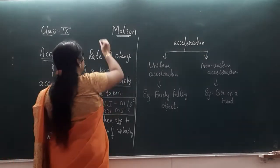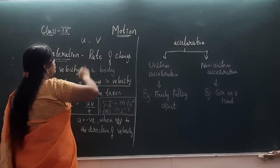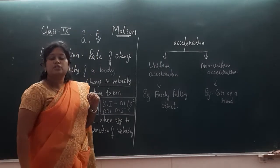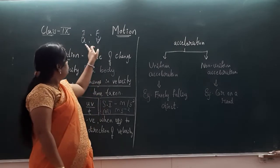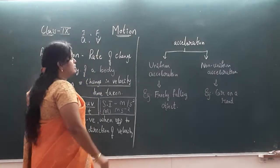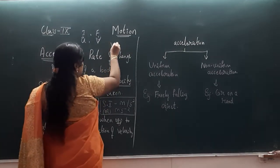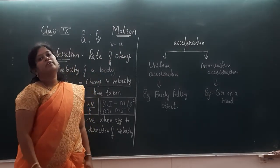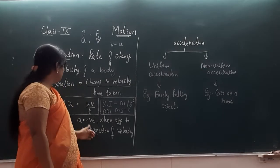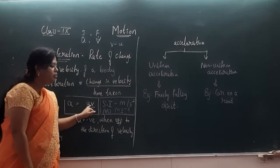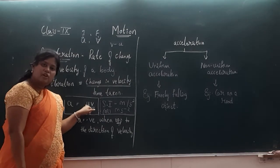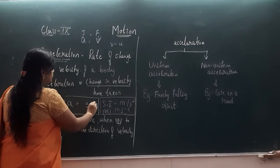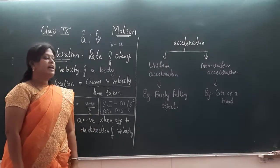How do we represent initial velocity? Initial velocity is represented by 'u', and final velocity is represented by the letter 'v' in the equations of motion. If I want to find out the change in velocity, then v minus u — that is final velocity minus initial velocity — divided by time t gives the acceleration.